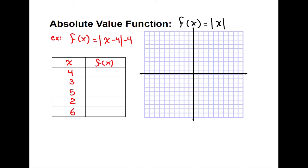Our next example is the absolute value function. An absolute value function in this form will ultimately have a V-shaped graph, either opening upward or downward — more details on this later in the semester. Inside the absolute value we have x minus 4, so we start with x equal to 4 and pick values to the right and left: 3 and 5, then 2 and 6. We plug these into the function to get the output values, plot them, and connect the points. This one has a V-shape opening upward.